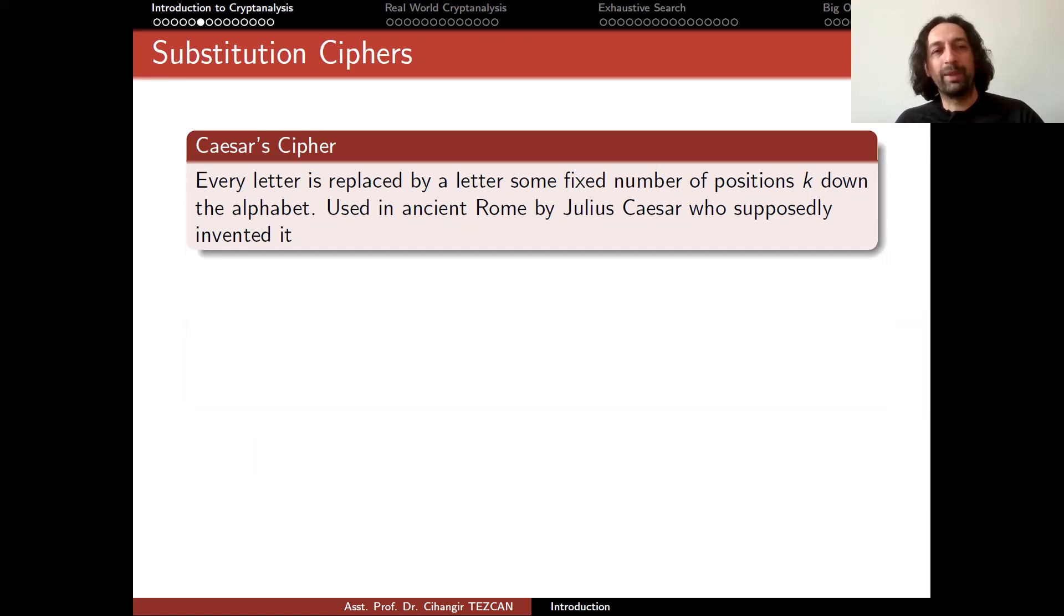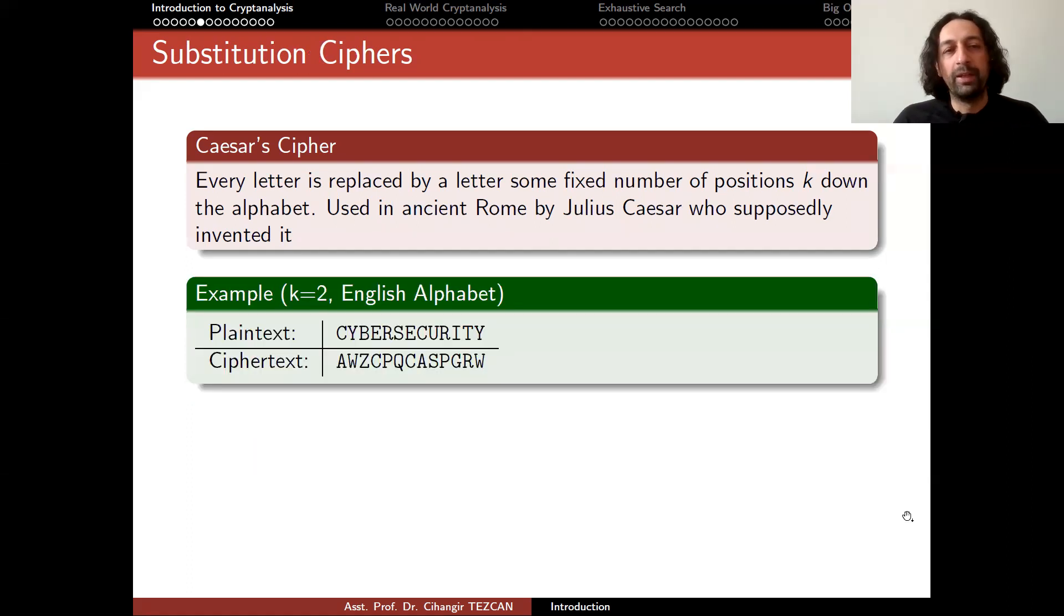Let's give the most famous and basic example, the Caesar cipher. In the cipher, every letter is replaced by a letter some fixed number of positions down the alphabet. It was used in ancient Rome and was supposedly invented by Julius Caesar. Of course, I said k positions down the alphabet, but in some other places it can be defined as k up the alphabet. It doesn't matter because if we think about English alphabet, going two down also means going 24 up. For this course, we assume that we are going down the alphabet.